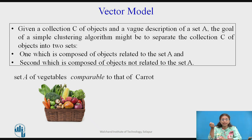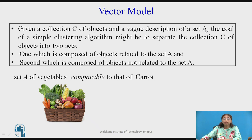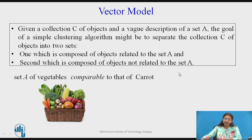In this vector model, while defining the weights we are going to consider the concept of clustering. We are given one collection of objects — think of it as a basket of vegetables. A weight description of the object we want to search is given, and the goal is a simple clustering algorithm which will separate the collection into two sets: one set composed of objects related to set A, and the second composed of objects not related to set A. For example, here I am finding the vegetables which are comparable to carrot.